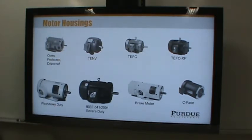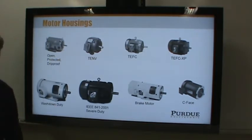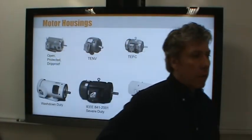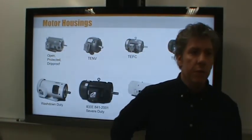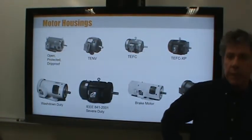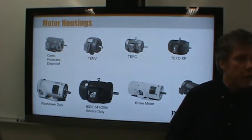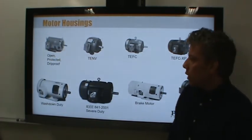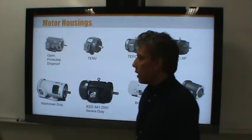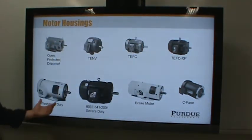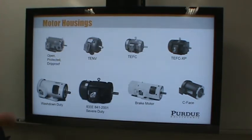Here's a wash-down duty motor. If you're dealing with food products, one specification of many food production lines is that equipment must be able to be washed down — sprayed with soap and water without destroying it or causing degradation. This is a wash-down rated motor; you could literally spray it with soap and water and it would be just fine.